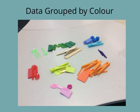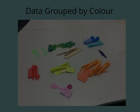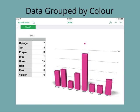This is data grouped by colour. We have green, blue, tan, purple, orange, pink, yellow and red. This is the chart for data grouped by colour. Green is the biggest, red and pink are the smallest.